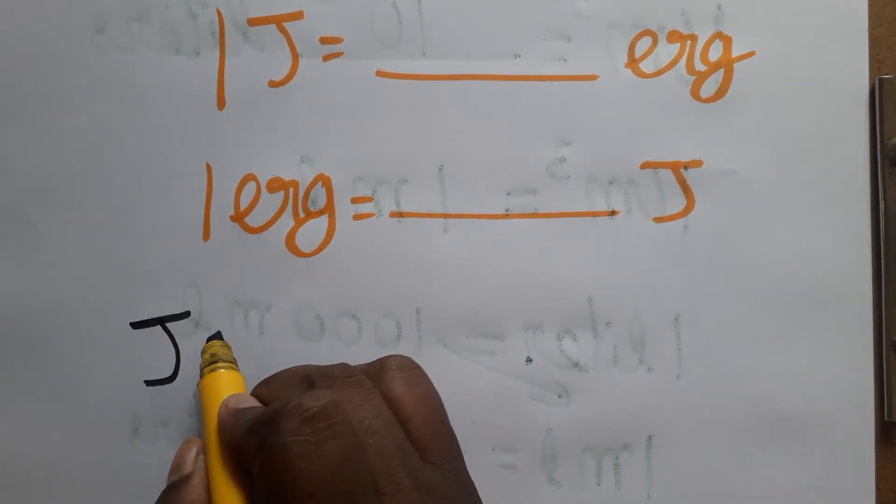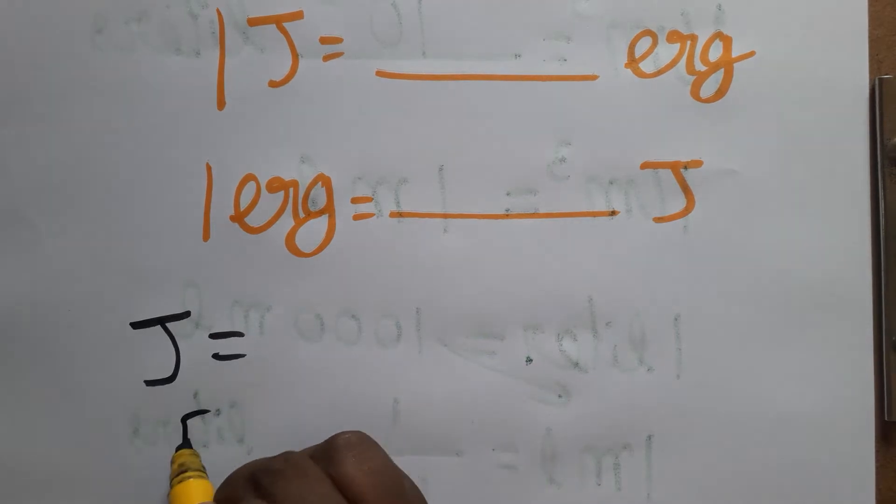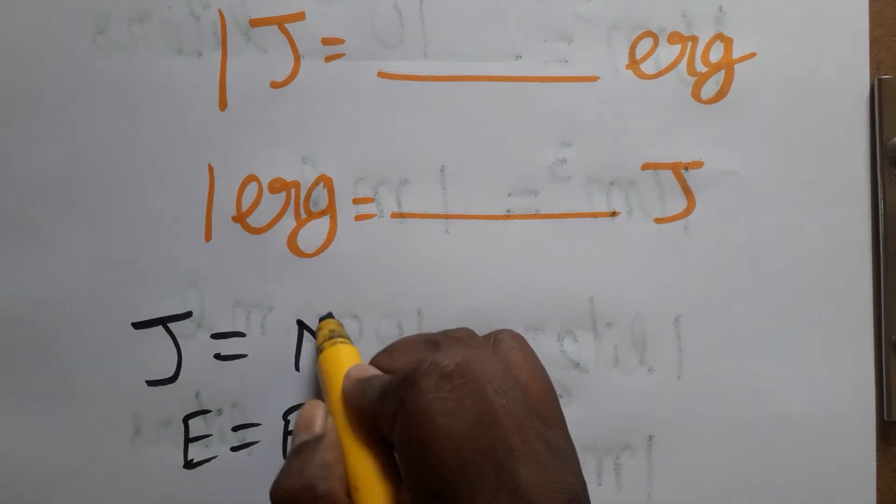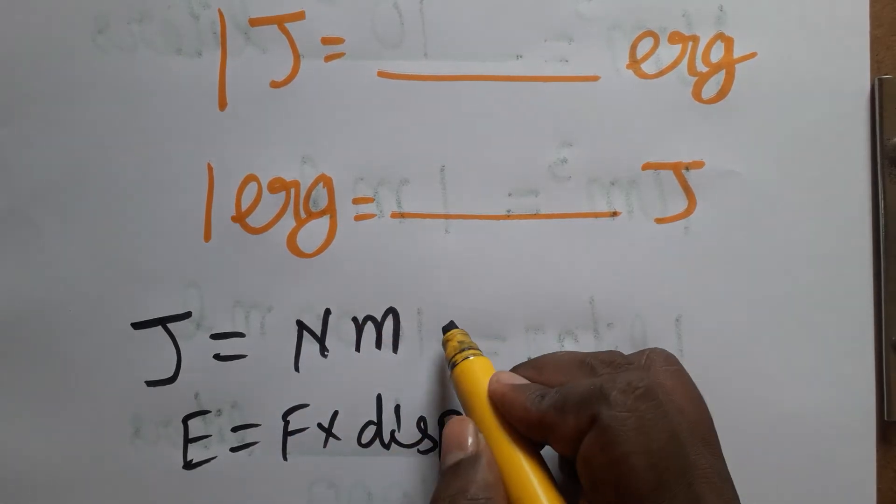Joules is the unit of energy. Energy we can take it as force into displacement. Energy formula is force into displacement. We can take it as Newton meter as 1 Joule. Newton is kg meter second minus 2, and into meter.